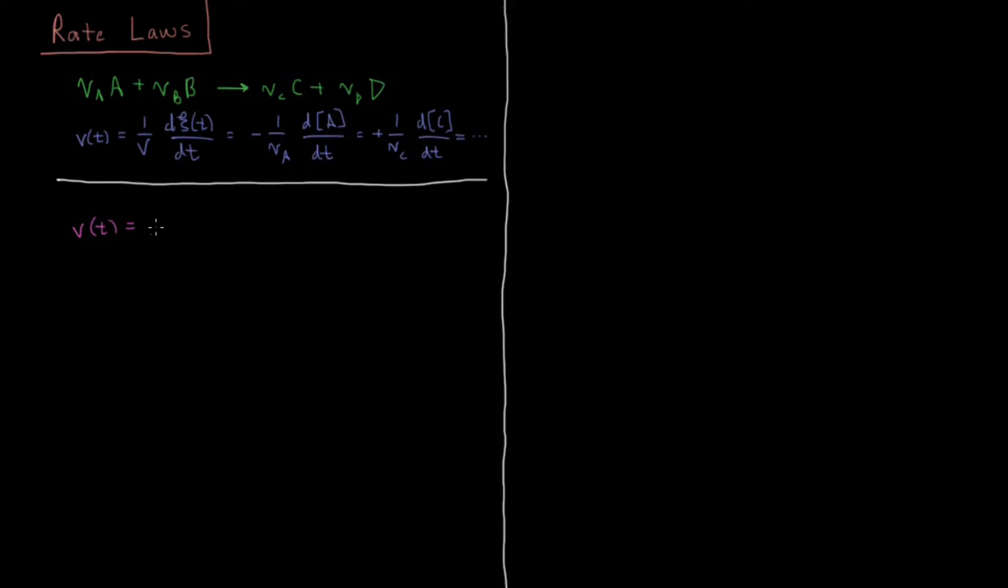Our rate of reaction here is going to be some constant K, called the rate constant, times the concentration of A, its molarity, its number of moles per liter, to some power mA. And mA is not necessarily equal to νA, it could be bigger, it could be smaller, it could be zero. Then the other reactant B to some power mB. This would be true for any given reactant, there's going to be some value here of its concentration to a given power.